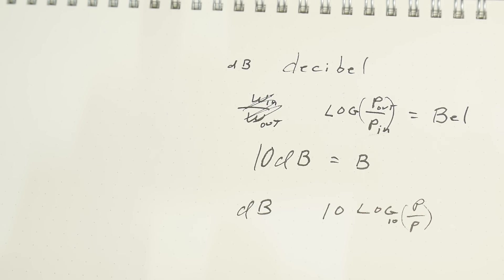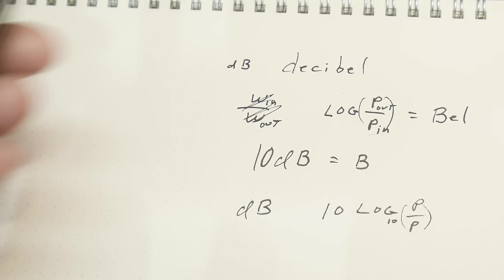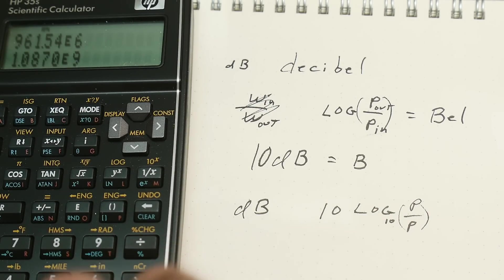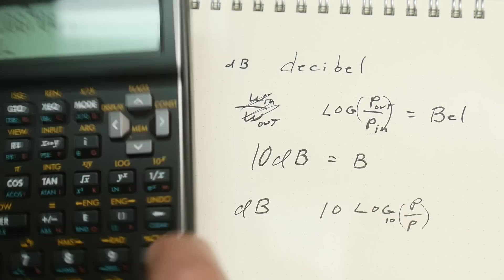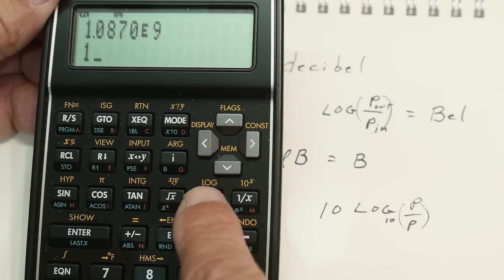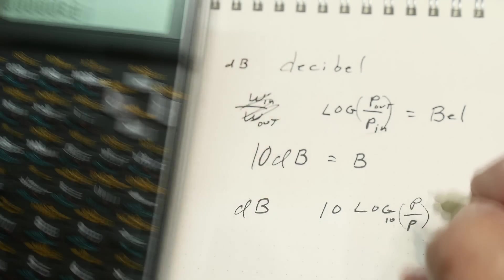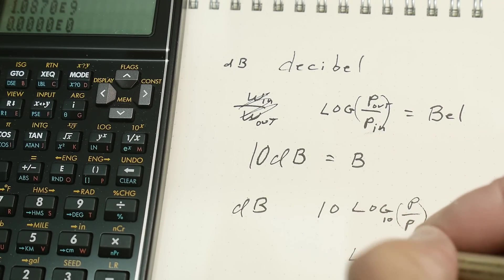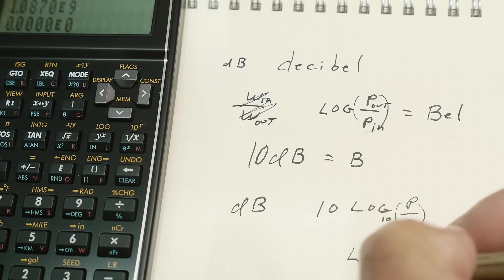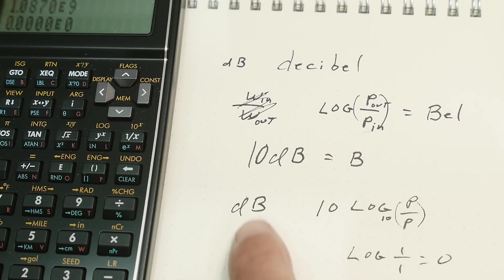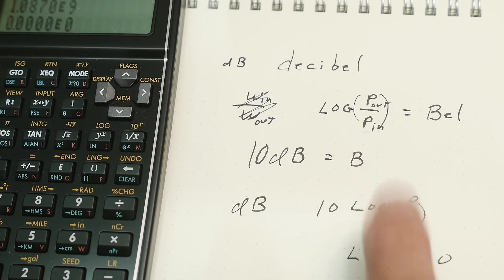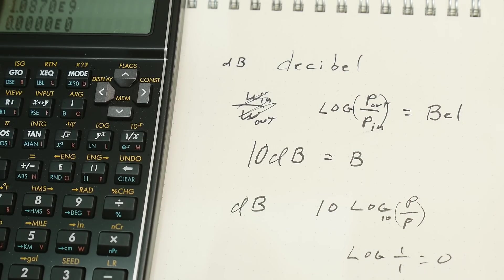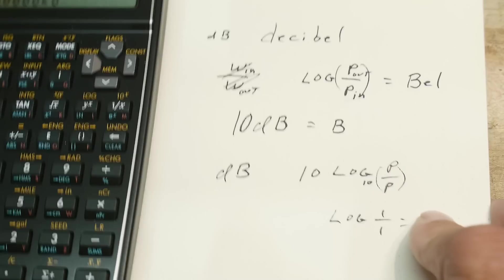If you have the same amount of power, 1 over 1, you have a logarithm of 1 times 10. If we take 1 and take the base 10 logarithm, that's 0, so the log of 1 divided by 1 is 0.